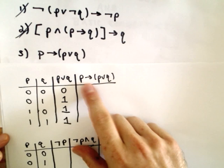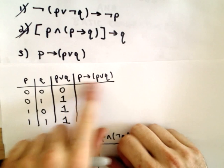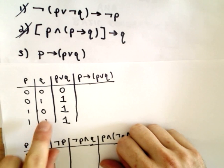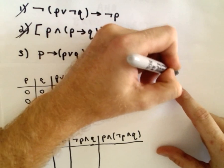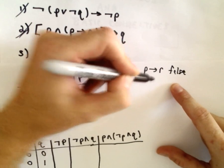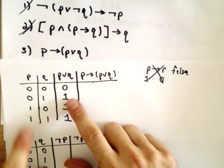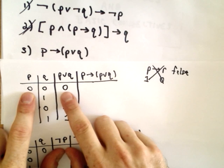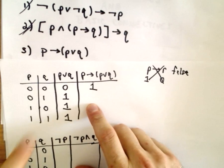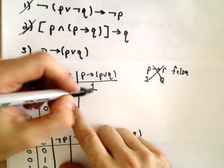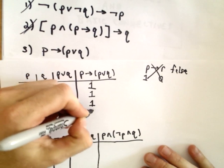Now we have to think about P implies (P or Q). Recall an implication is considered false only when P is true and the consequent R is false — that's when we say the implication is false. Notice we don't have that happening here. In the first row P is false and the or statement is false — we consider that implication to be true. P is false and the or statement is true — again we consider the implication to be true, and the same thing for the third and fourth rows: still true.